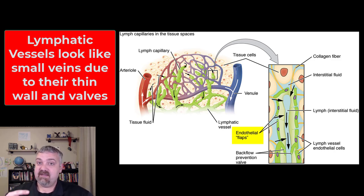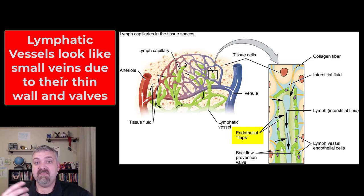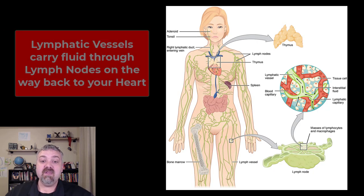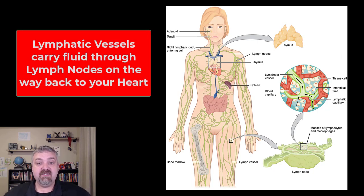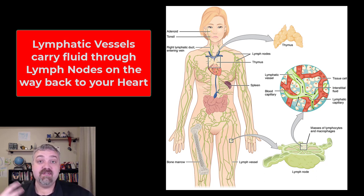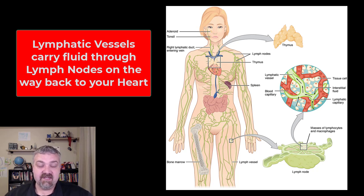Now this is not a circulatory system. There's no pump like the heart, and it isn't pumped away from your heart and back. All of these lymphatic vessels start at the extremities and they work towards the heart, so they're all traveling in one direction. This fluid that is now in the lymphatic system only has one way to go — towards your abdominal pelvic cavity and towards your heart.